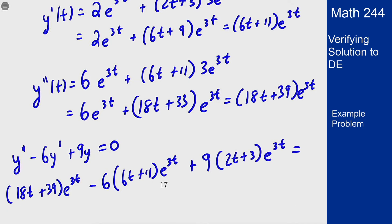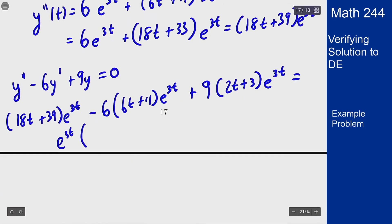Every term here is e^(3t), so I'll bring that to the front. This is e^(3t) times what? Well it's e^(3t) times we have an 18t + 39, we have minus 36t minus 66, and then plus 18t + 27.